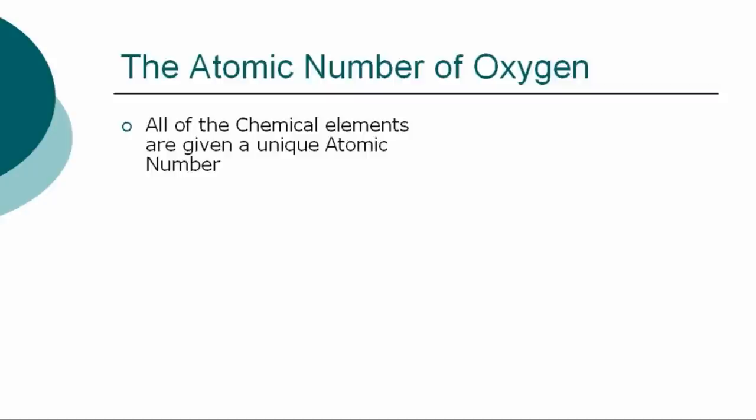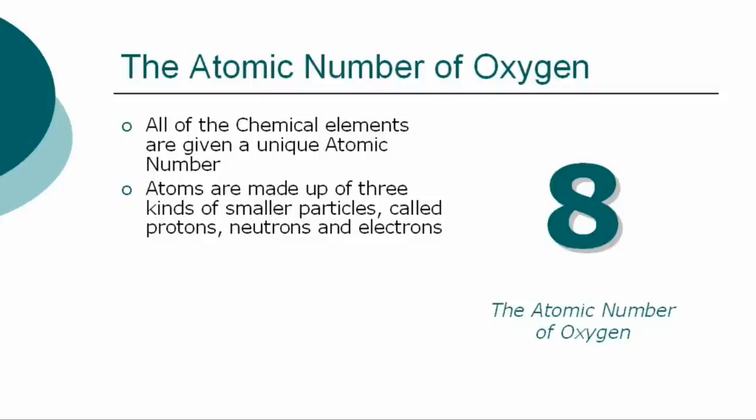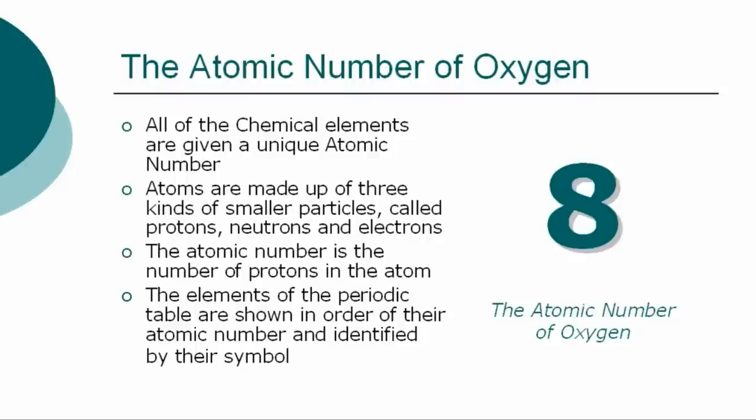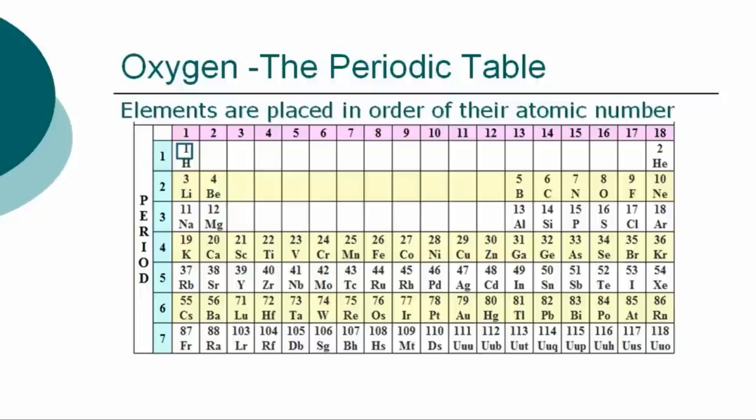All of the chemical elements are given a unique atomic number. The atomic number for oxygen is eight. Atoms are made up of three kinds of smaller particles, called protons, neutrons, and electrons. The atomic number is the number of protons in the atom. The chemical elements of the periodic table are shown in order of atomic number and identified by their symbol.